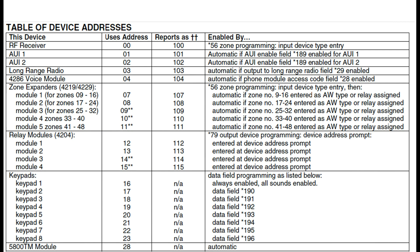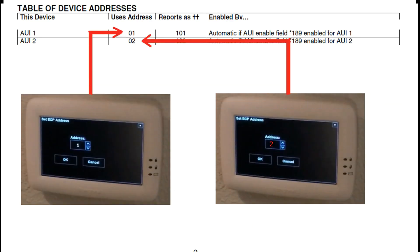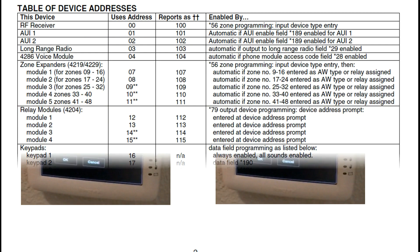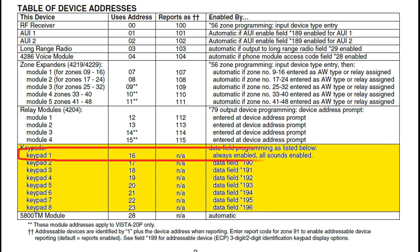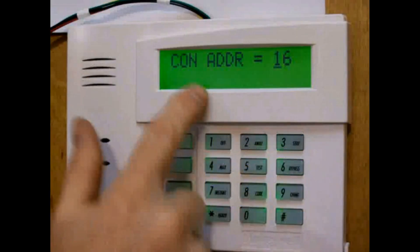If you want to hook up a second graphics panel, its address will be set to 2, and you'll have to set that when you install the panel. According to this list, we can only have two graphic user interface panels. The rest of the keypads will be your standard keypads, and the addresses are shown down here. Keypad number 1 is set to address 16. It is always enabled and cannot be turned off. This is because the Vista assumes this is the keypad you're going to use for your initial installation. So when you install your first keypad, you have to set it to address 16. I showed you how to do this in the second video in this series.